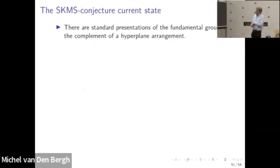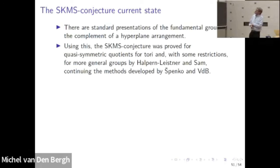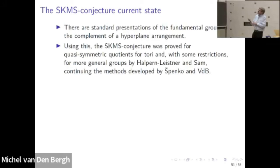If we have a hyperplane arrangement, there are good ways of describing the fundamental group — and the first problem in the SKMS conjecture is to describe this fundamental group, which is not easy. For a hyperplane arrangement there are standard descriptions, and this allowed Halpern-Leistner and Sam to prove the SKMS conjecture for quasi-symmetric quotients of tori, and also for quotients of quasi-symmetric representations for more general groups with some restrictions. Basically, they developed the methods we had developed further.